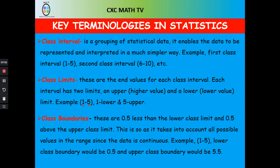Class boundaries are found by adding 0.5 or subtracting 0.5 from your upper and lower class limits. You add 0.5 to the upper class limit to get the upper class boundary, and you subtract 0.5 from the lower class limit to get the lower class boundary.